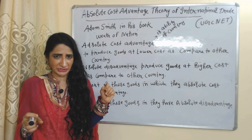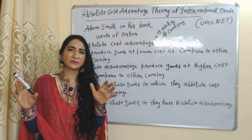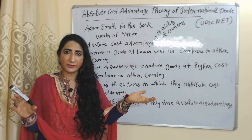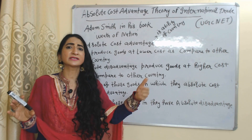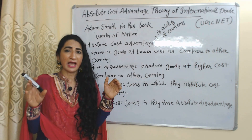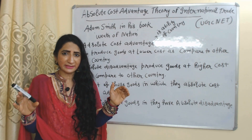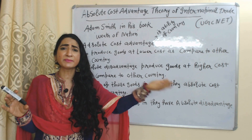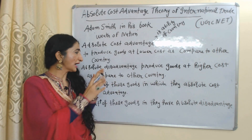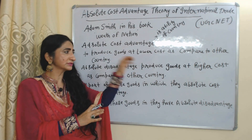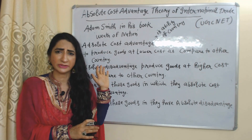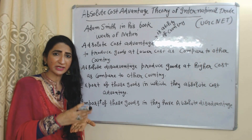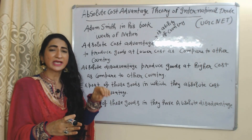What do you mean by absolute cost advantage? Absolute cost advantage is the ability of a country to produce goods at lower cost as compared to other countries. Absolute disadvantage means producing goods at higher cost as compared to other countries.